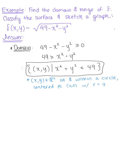So drawing ourselves a quick sketch in R² of our domain here, we have the x and y axis, and our domain is the set of all points that are on this circle of radius 7 and within this circle, shading everything in on the inside.